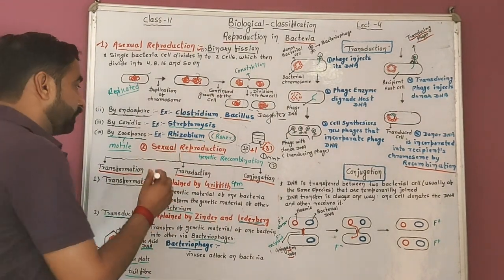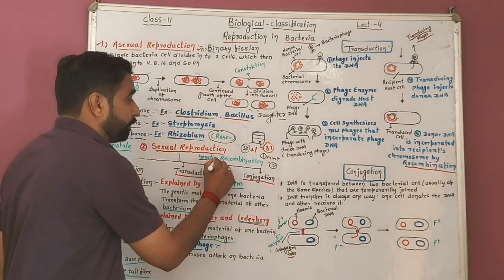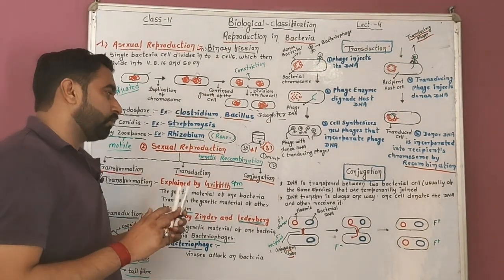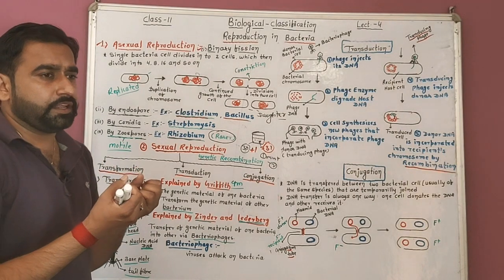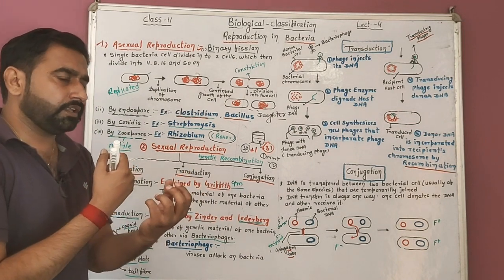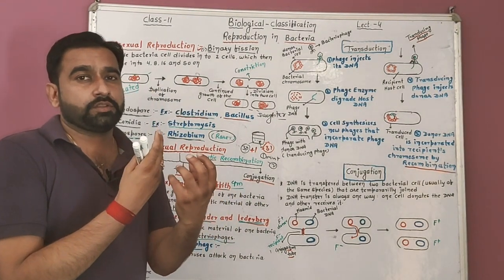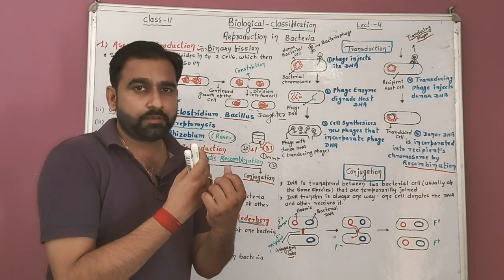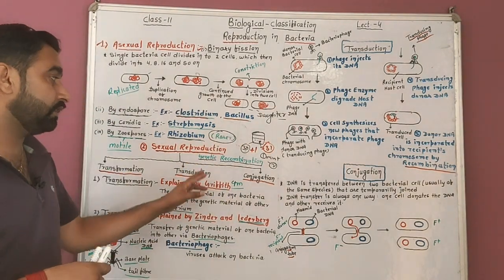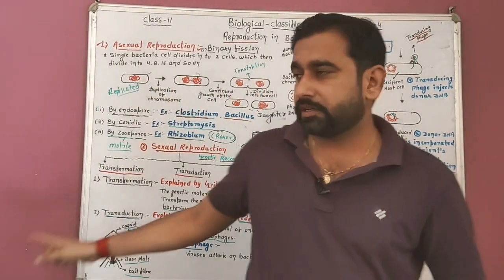Now we move on to sexual reproduction in bacteria. Sexual reproduction in bacteria is called genetic recombination. Gamete formation does not occur here. Without gamete formation, sexual reproduction occurs through transfer of genetic material — by transformation, transduction, or conjugation. Though technically, in true sexual reproduction gametes fuse during fertilization, the same concept applies here — so this is called genetic recombination. The first type of sexual reproduction in bacteria is transformation.